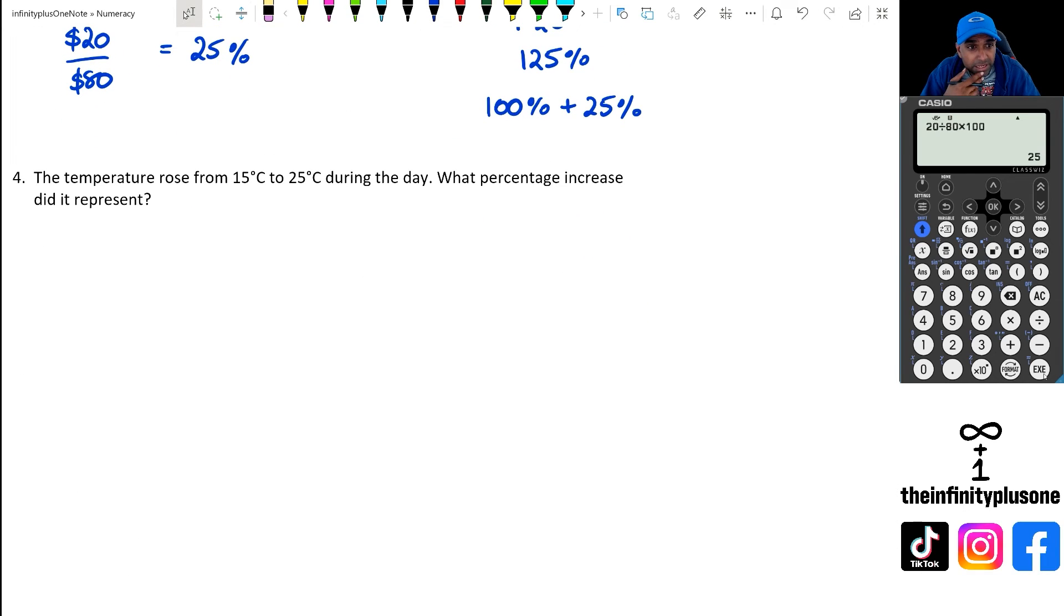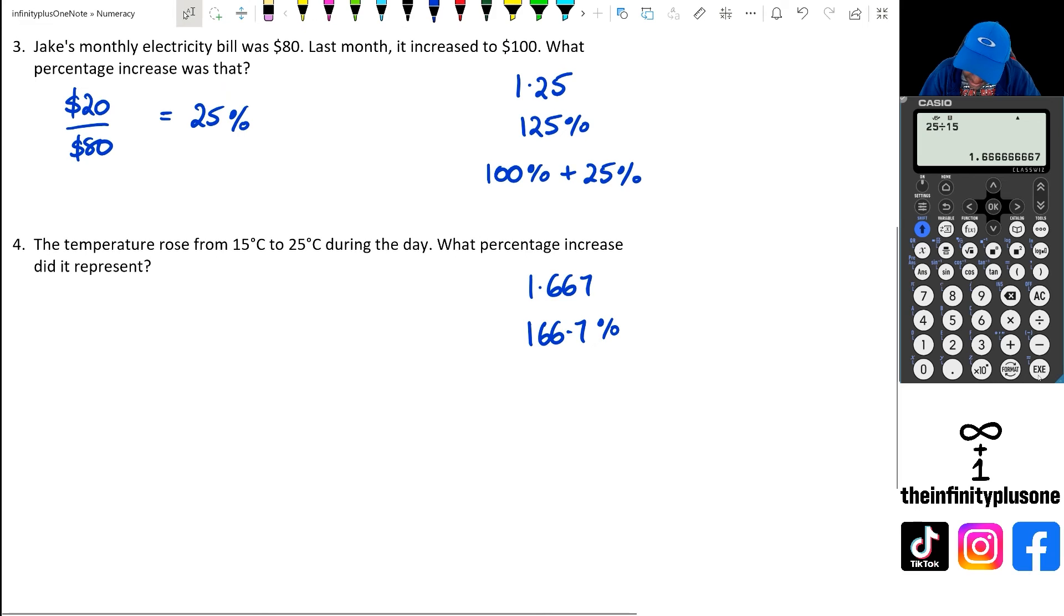And finally, the last question here, we've got 15 degrees to 25 degrees. So again, using the calculator method, I'm just going to go 25 divided by 15. When I do this, I get 5 over 3. And if I do it like this, I'm going to get up to 1.667 with recurring decimals. So then that means we're looking at a 166.7% increase. And of course, that could be written as 100% plus 66.7%. So we can actually say it's increased by 66.7%.